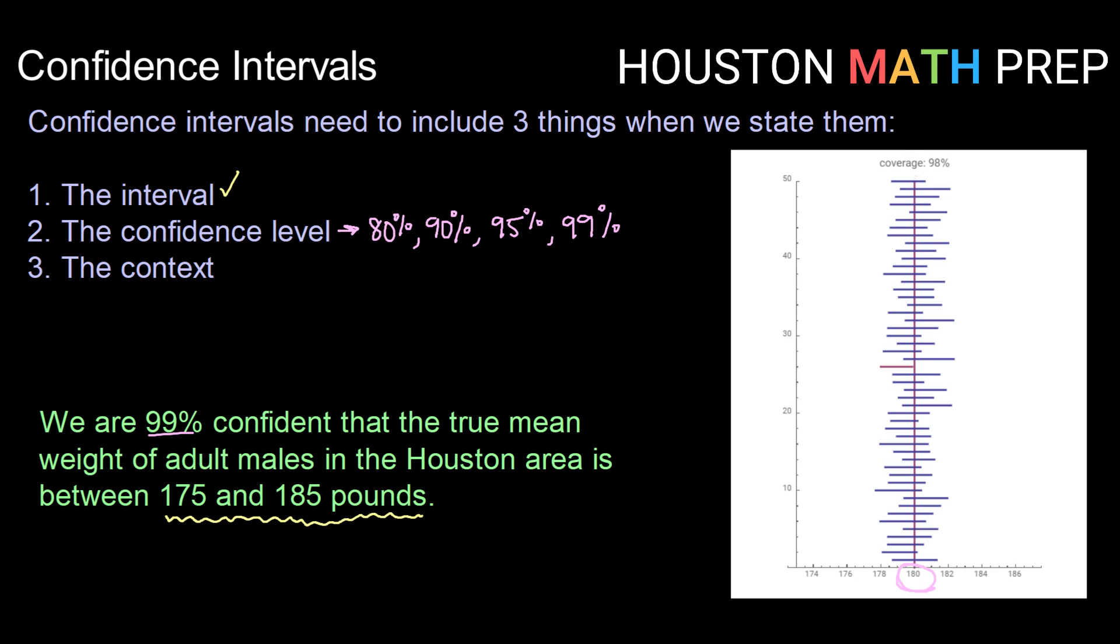But then if you look here, this one that's in red does not contain the true mean of 180. And that just happens based on variance in samples. Not every sample that we take is going to be as representative of our population. So this is an example of, in this case, 1 out of 50 did not actually contain the true mean. So we had an actual coverage of 98%, but that matches pretty closely with our 99% confidence level.